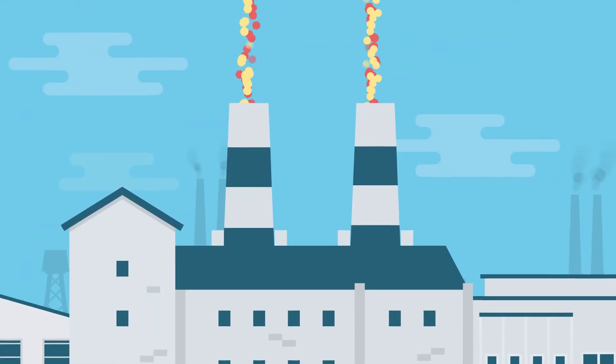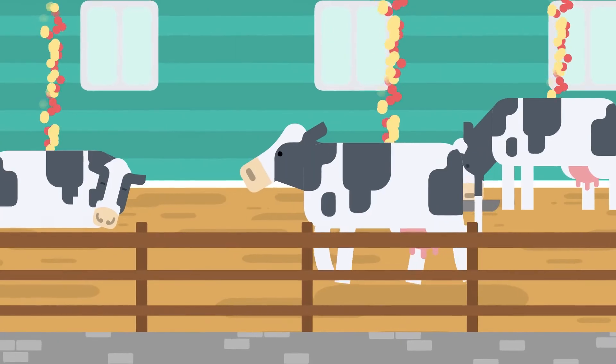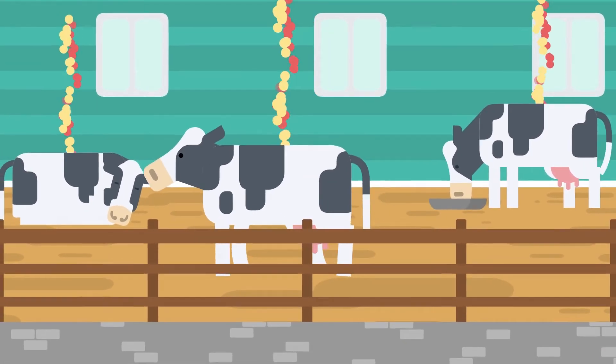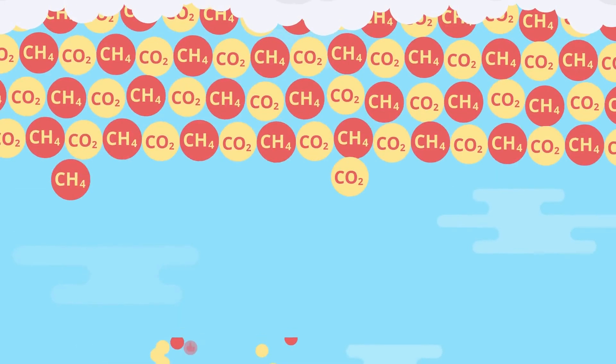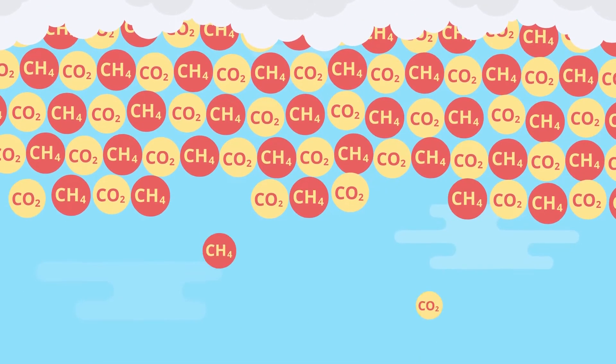By burning fossil fuels to power our civilization, producing our food through industrial farming and careless disposal of waste, we are filling the atmosphere with greenhouse gases faster than the Earth's ability to remove them.